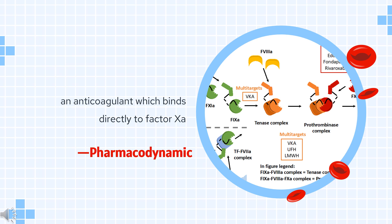Rivaroxaban is a unique anticoagulant for two reasons. First, it does not involve antithrombin 3 (AT3) to exert its anticoagulant effects. Secondly, it is an oral agent, whereas the widely used unfractionated heparin and low molecular weight heparins are for parenteral use only.